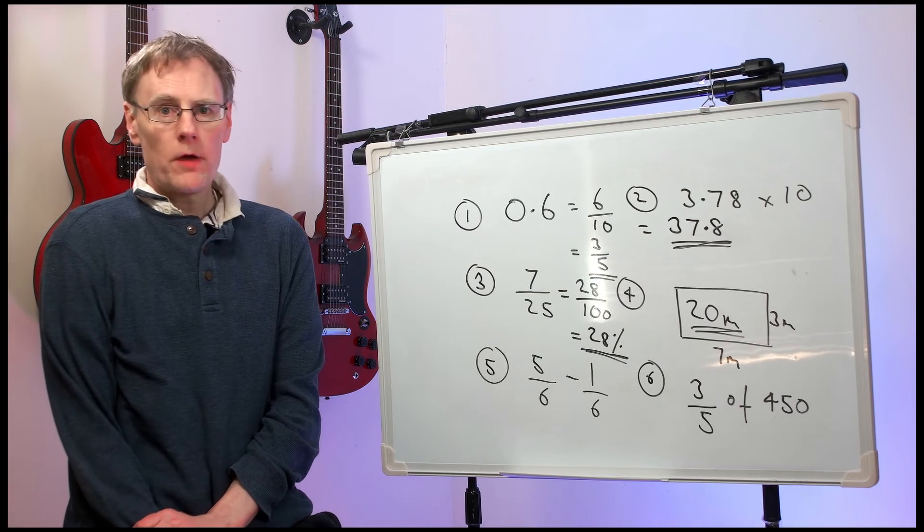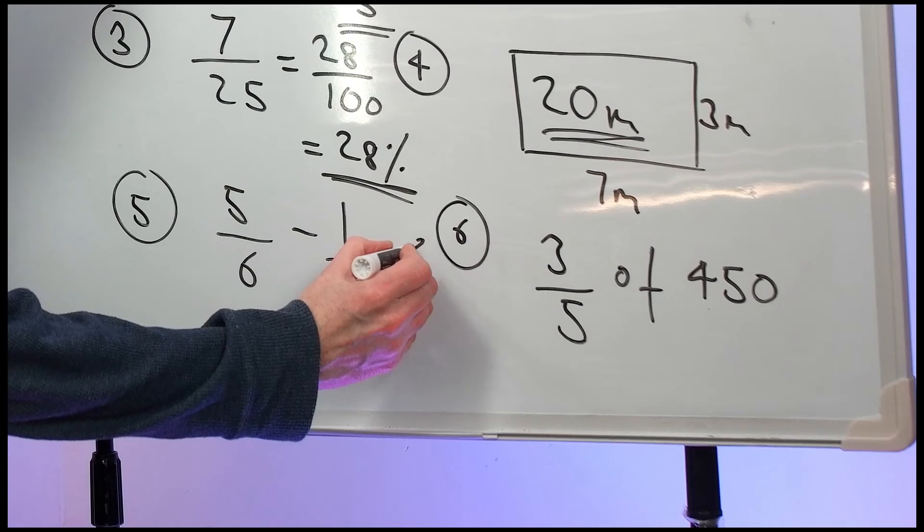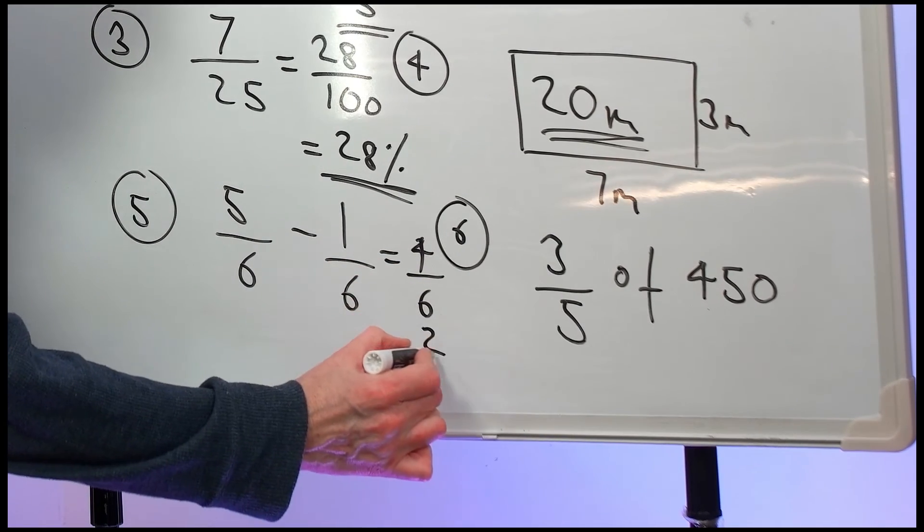Question five: Five-sixths take away one-sixth. Well, that's going to be four-sixths. But to get your mark, you must reduce it to two-thirds.